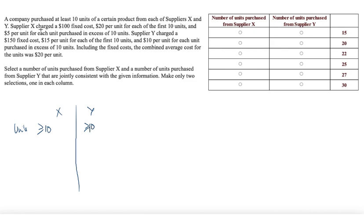Supplier X charged a $100 fixed cost, so a $100 fixed cost and $20 per unit for each of the first 10 units, which means another $200 because of course the company did buy at least 10 units. So it did pay this $300 and $5 per unit for each unit purchased in excess of 10 units. So $5 per unit when the number of units was more than 10.